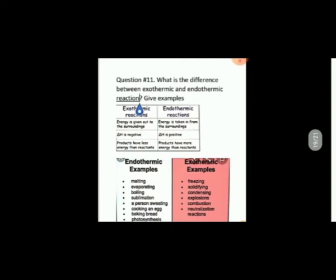For the exercise question on the difference between exothermic and endothermic reactions: exothermic reactions release heat energy into the surroundings, while endothermic reactions take in energy from the surroundings. In exothermic reactions, products have less energy than reactants and heat energy is negative. In endothermic reactions, products have more energy than reactants and heat energy is positive. Examples of endothermic reactions: melting, evaporating, boiling, sublimation, sweating, cooking an egg, baking bread, photosynthesis. Examples of exothermic reactions: freezing, solidifying, condensing, explosions, combustion, neutralization.